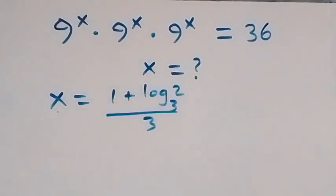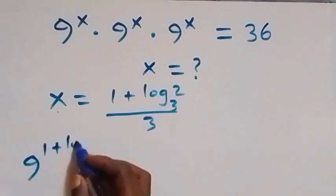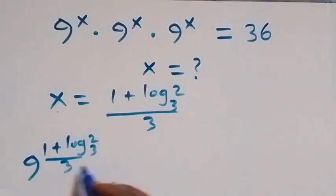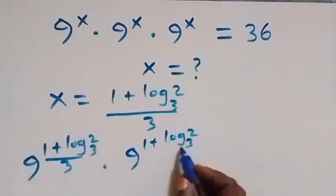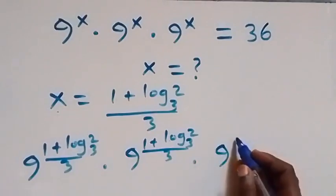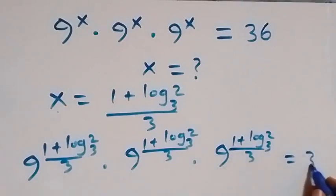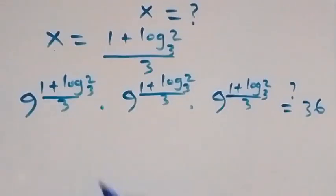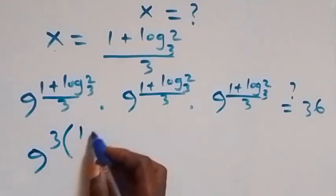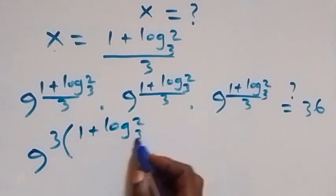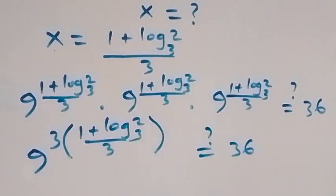We substitute the value x equals (1 plus log base 3 of 2) over 3 into the original expression: 9 raised to power x, times 9 raised to power x, times 9 raised to power x equals 36. Since we are multiplying with the same base, we add the powers, giving 9 raised to power 3 times (1 plus log base 3 of 2) over 3, and this should equal 36.